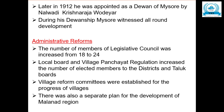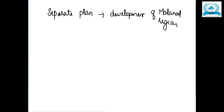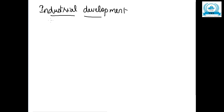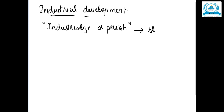Now let us see the next reform — industrial development. The main slogan of Sir M. Vishweshwaraya regarding industries was 'Industrialize or Perish.' This shows the importance he gave to the development of industries. During this time he started a number of industries, including iron works at Bhadravati.